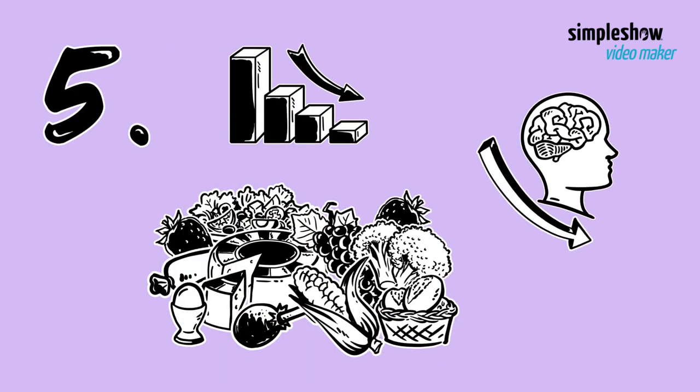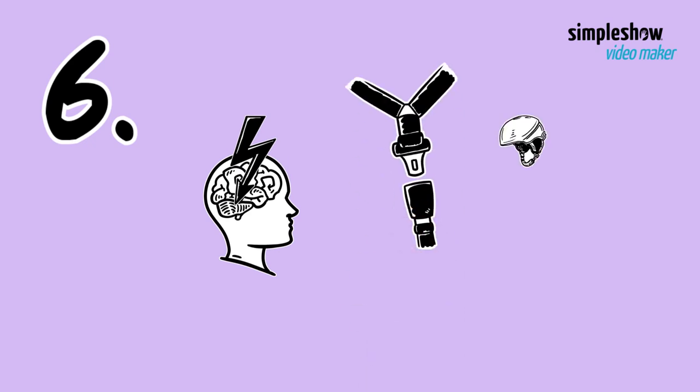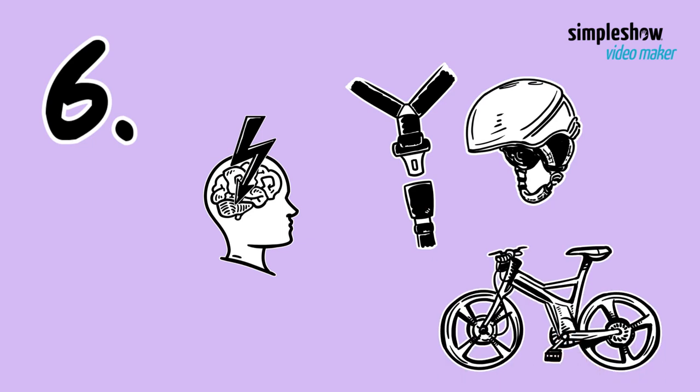Six: protect your brain from injury by wearing a seat belt and using a helmet when playing contact sports or riding a bike. Brain injury can raise risk of cognitive decline and dementia.